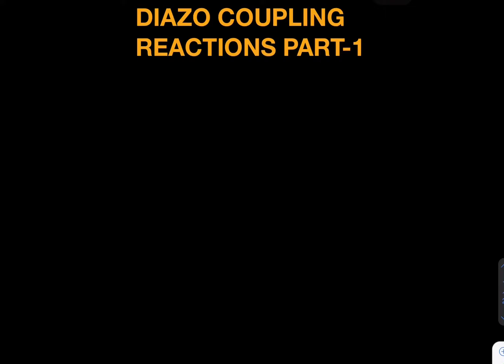So first of all, let's learn what is diazo. Diazonium is a group when we have N2 plus like this on a ring, and we can call it Ar-N2 plus also.